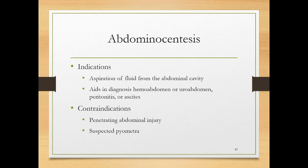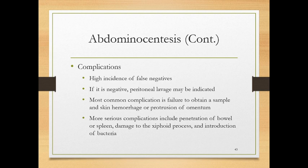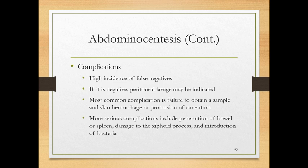Abdominocentesis is done to aspirate fluid from the abdomen or diagnose what kind of fluid is present. Contraindications include penetrating abdominal injury or suspected pyometra. A common complication is a false negative — when we stick a needle in, we don't know exactly where organs and intestines are. Fluid may not collect at the insertion point, so we get nothing even though fluid exists elsewhere. If negative, we can perform peritoneal lavage: instill sterile fluid into the peritoneal space, then aspirate it back and check for abnormalities.